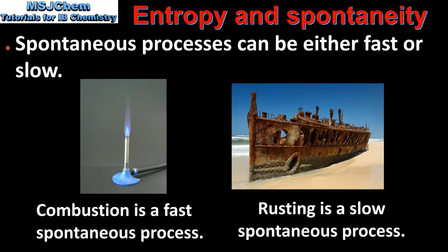Spontaneous processes can be either fast or slow. Combustion is a fast spontaneous process, whereas rusting is a slow spontaneous process. So the spontaneity of a process tells us nothing about the speed at which the process takes place.